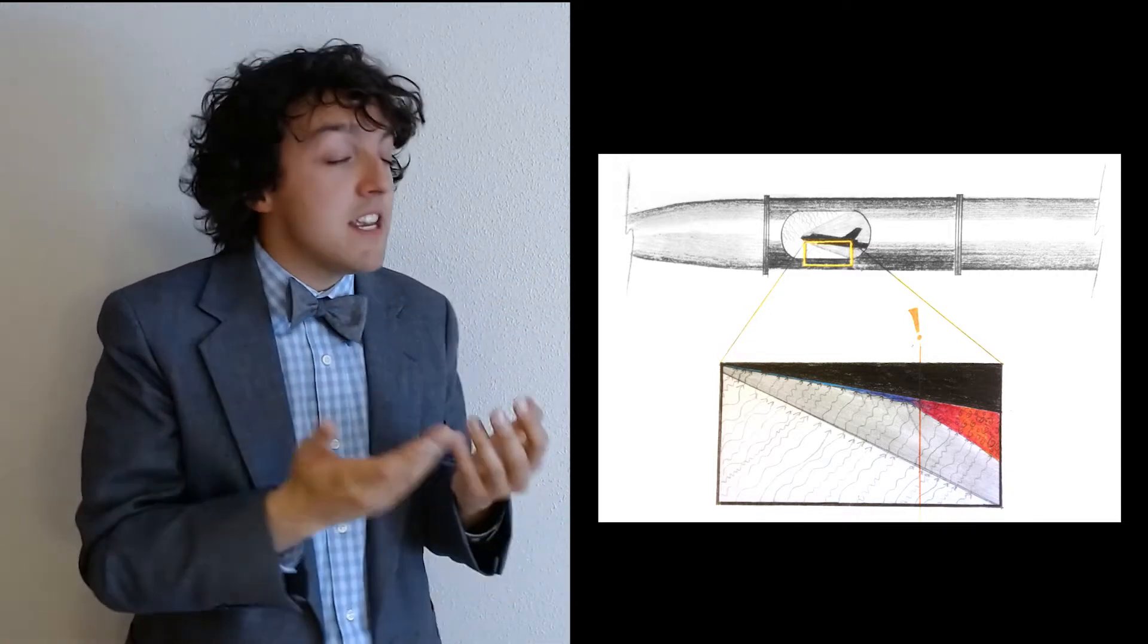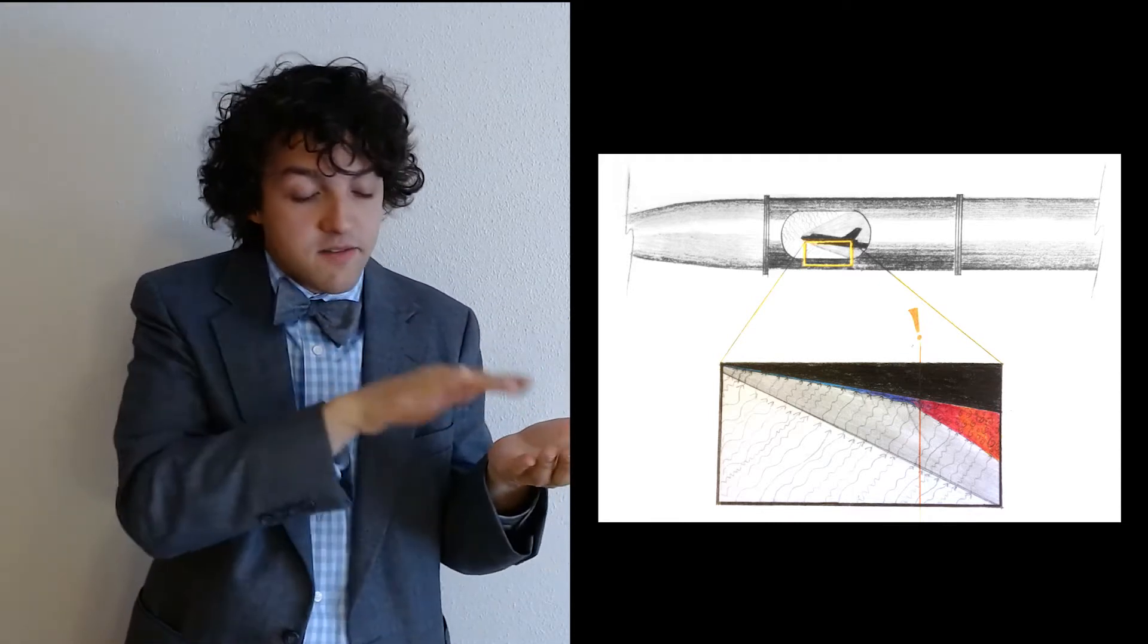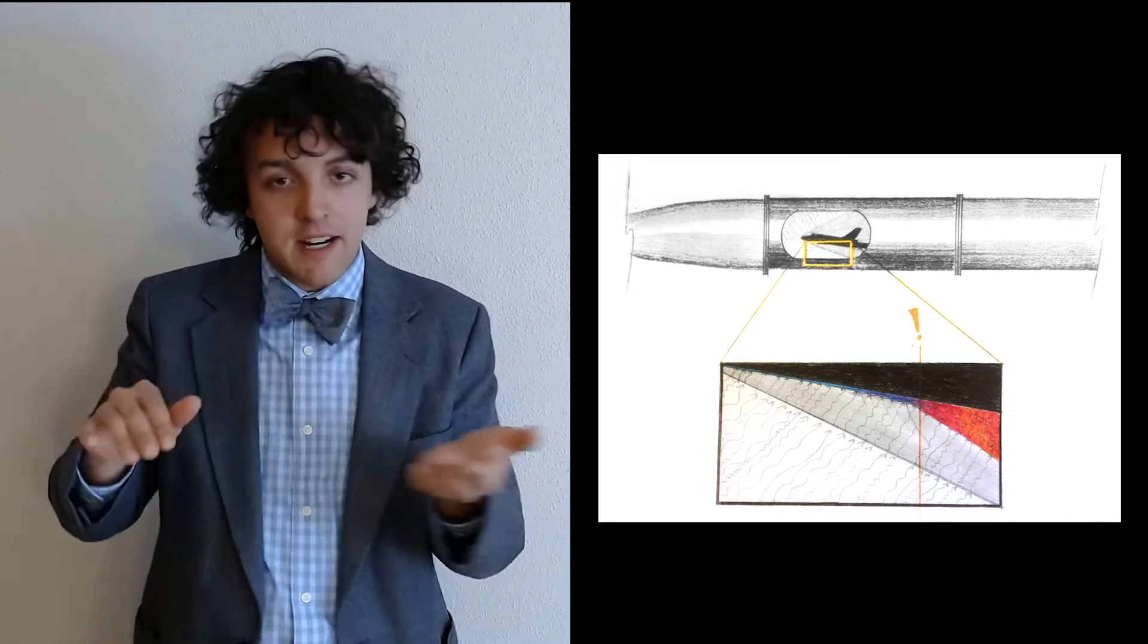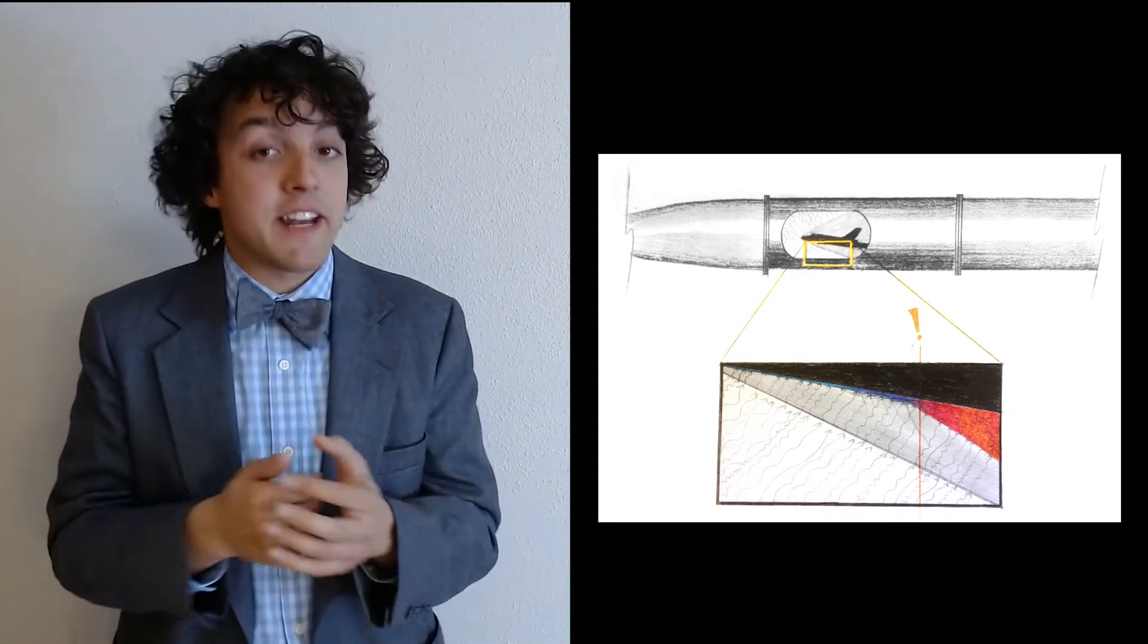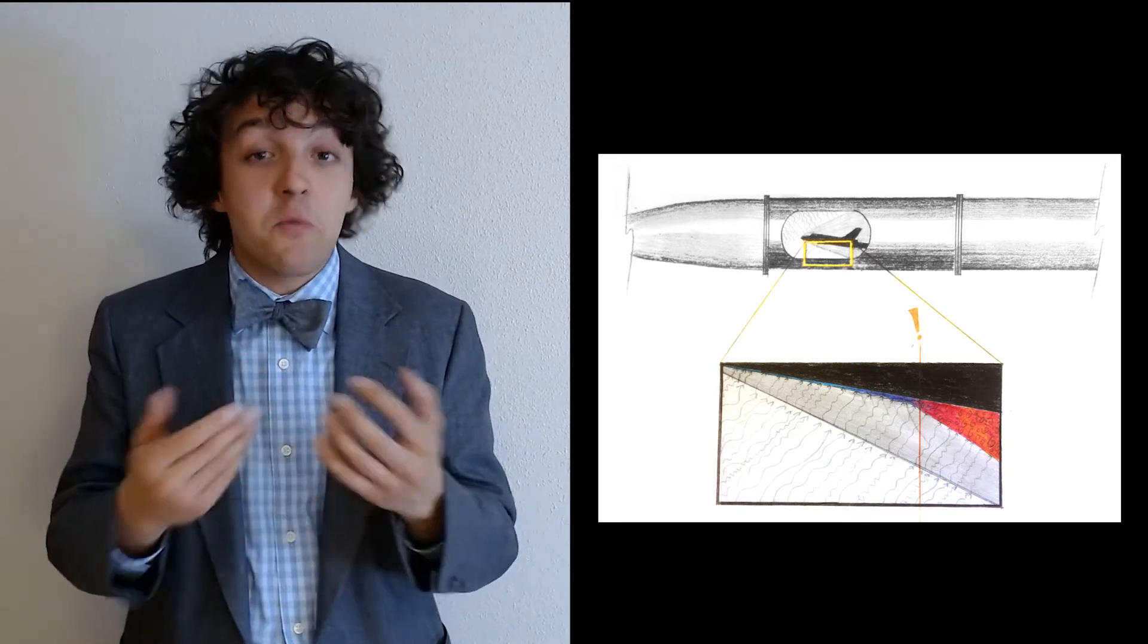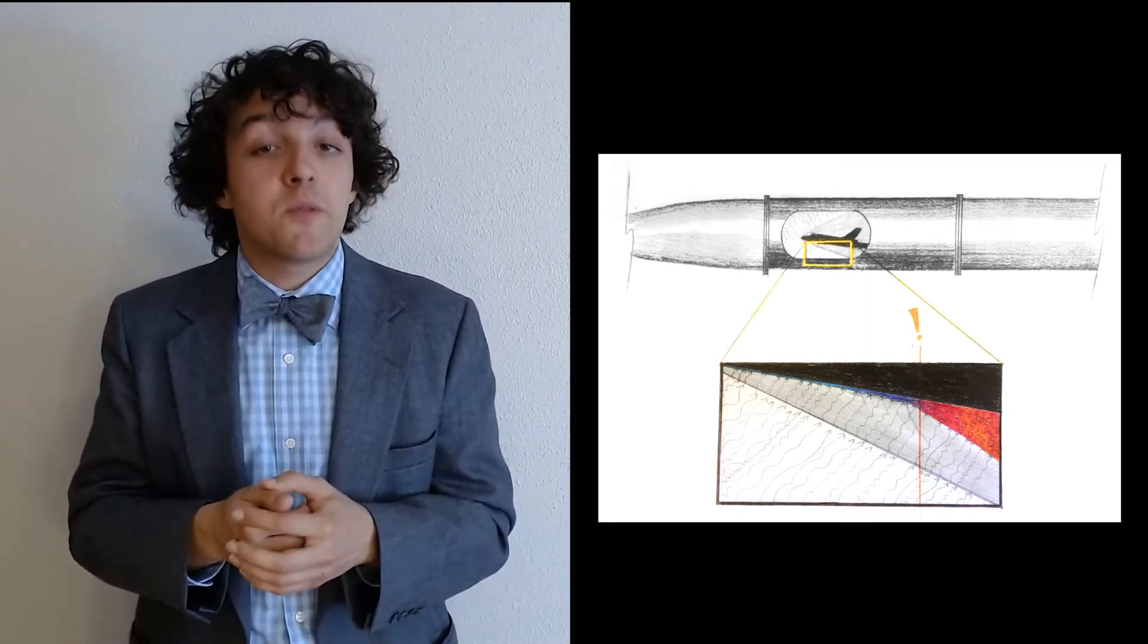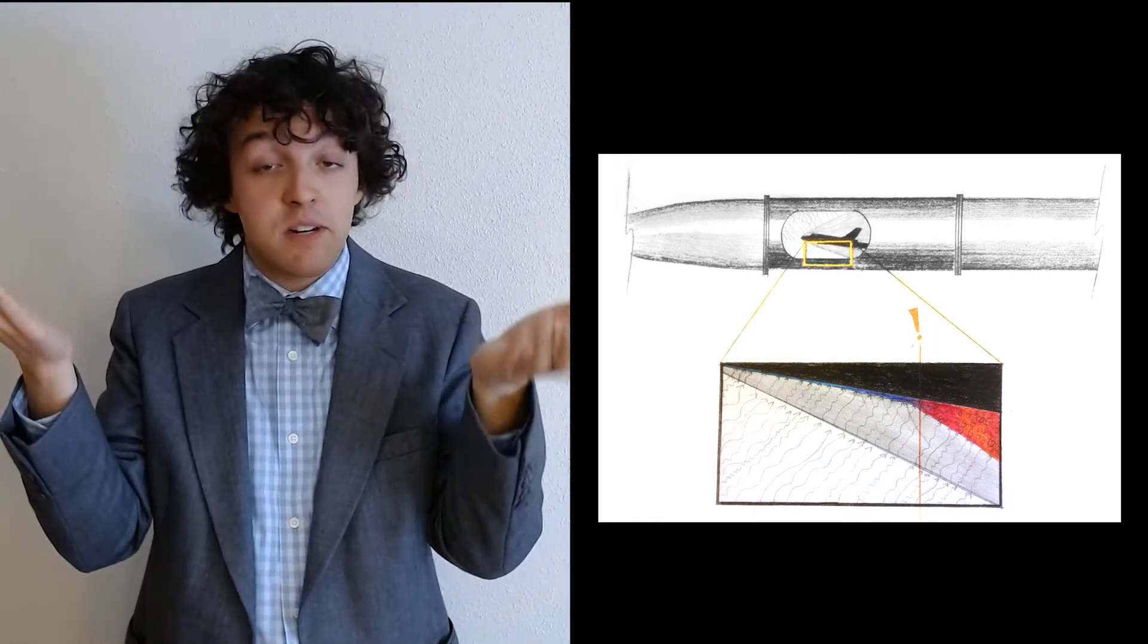We know from many years of observations that boundary layers typically start out as smooth organized flows but eventually transition to become chaotic and unpredictable, or turbulent. That might not seem like an important distinction for such a small amount of air, but for an aircraft traveling well above the speed of sound the difference between a smooth boundary layer and a turbulent boundary layer can literally be the difference between life and death.